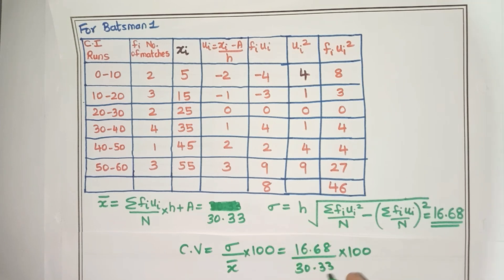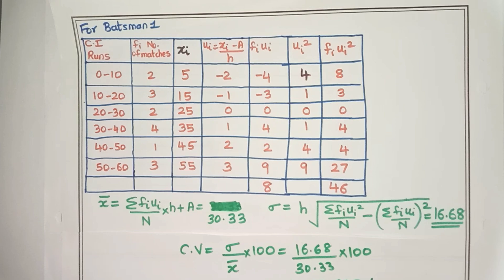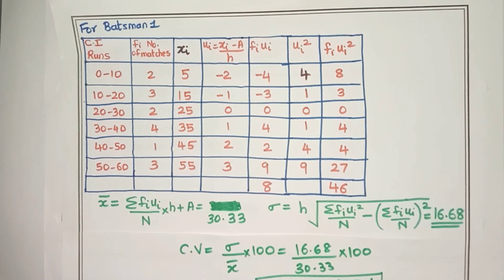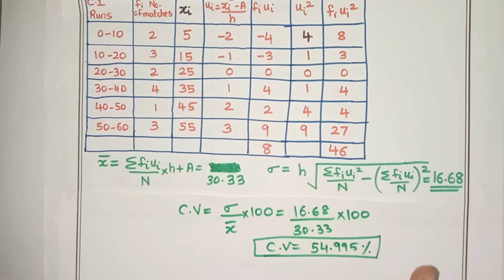Now on simplifying, you will get the CV to be 54.995 percentage. So the coefficient of variation for the first batsman is 54.995 percent.